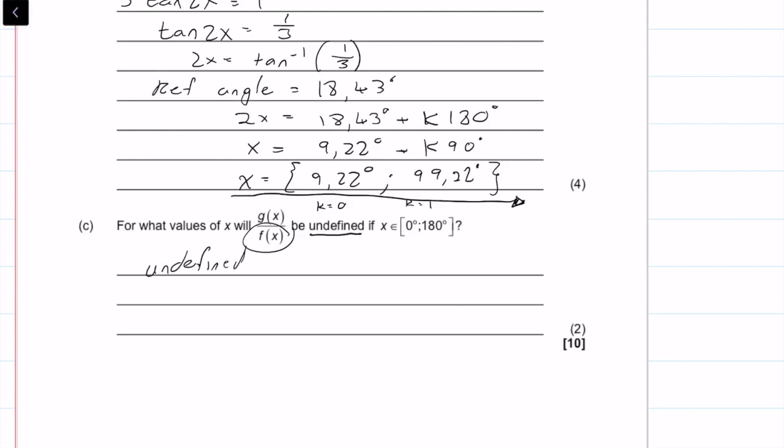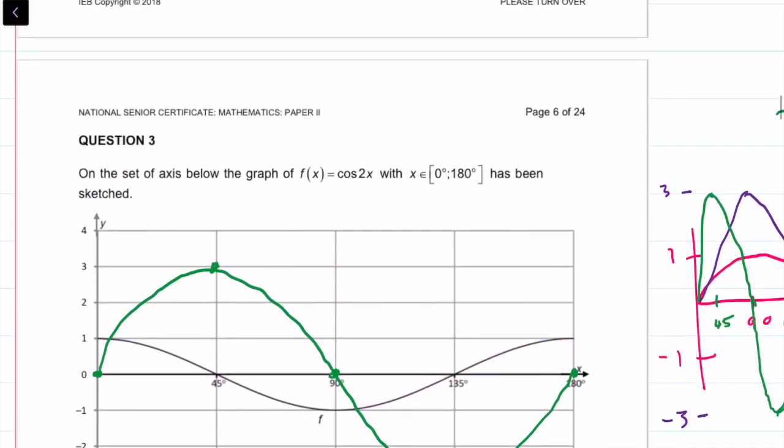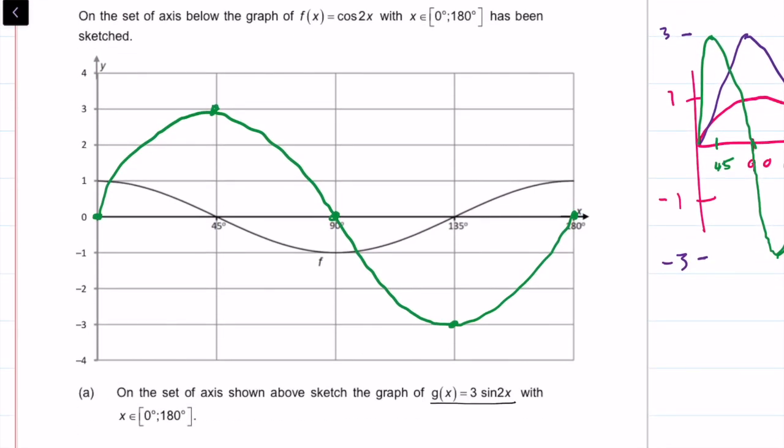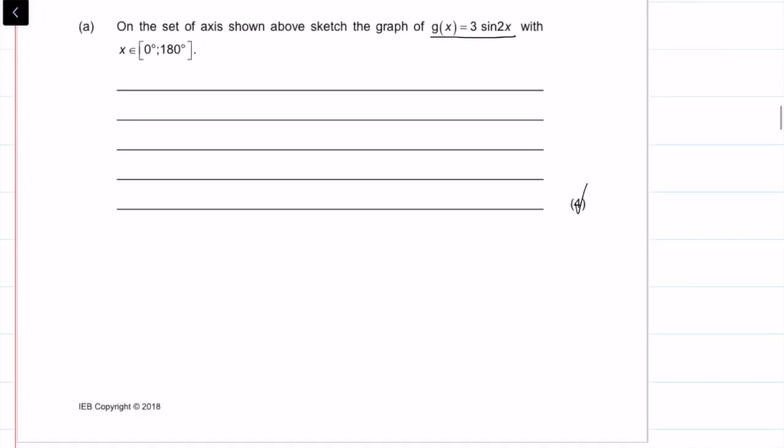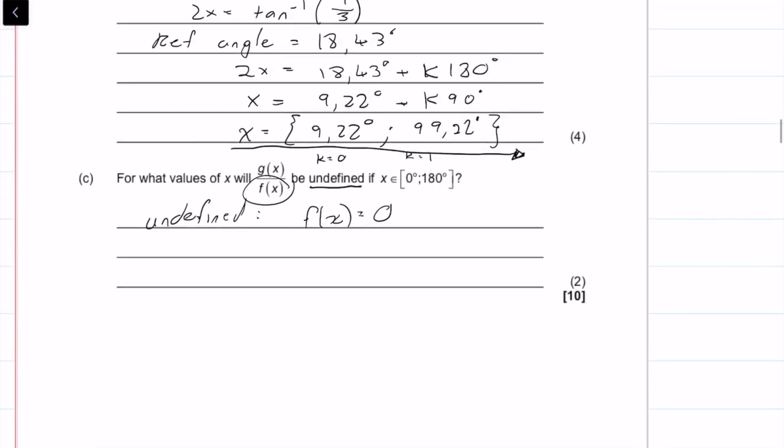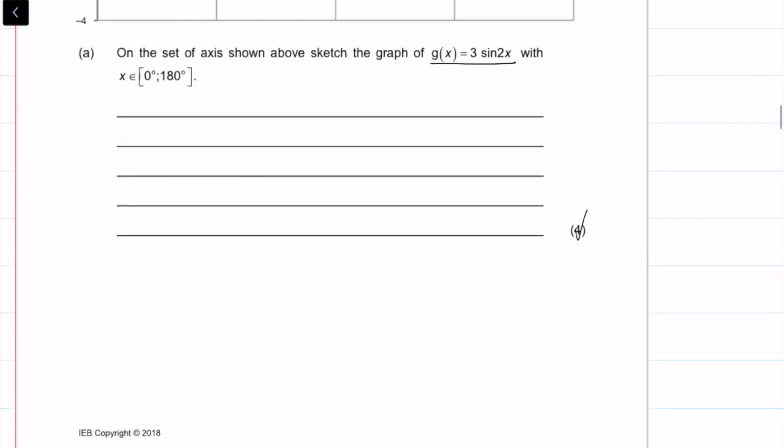For undefined, what we have is that f of x is equal to 0. So f of x is the graph that was drawn on for us already, so we just need to find the points where f of x equals 0. That's that point right there and that point right there. So we can say cos of 2x is equal to 0. Therefore, x is equal to 45 degrees and 135 degrees.